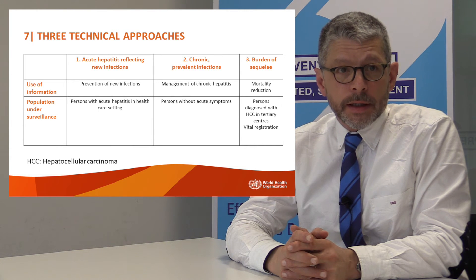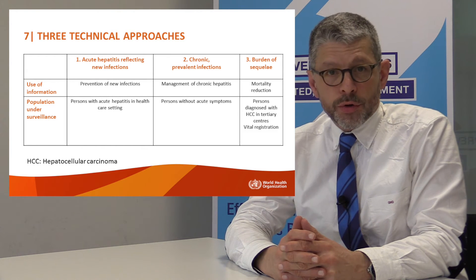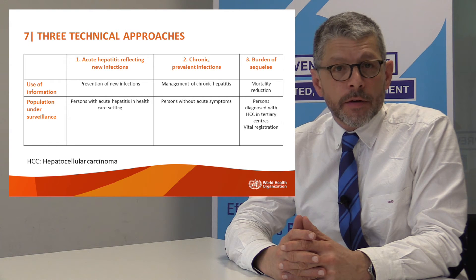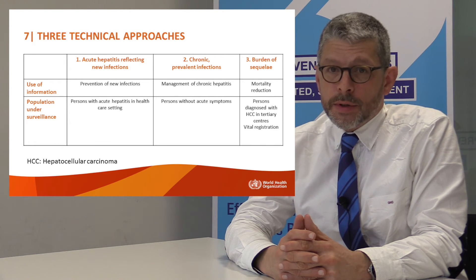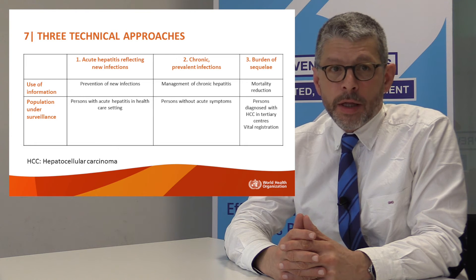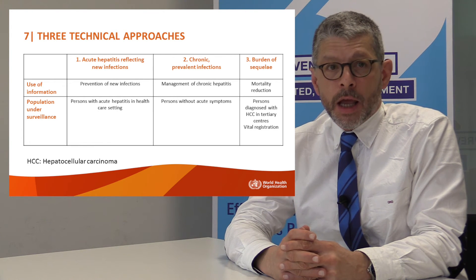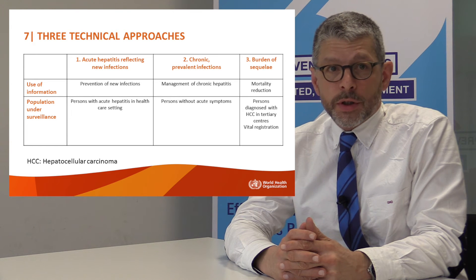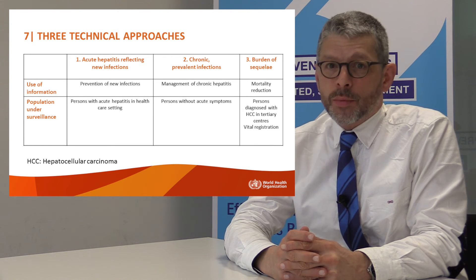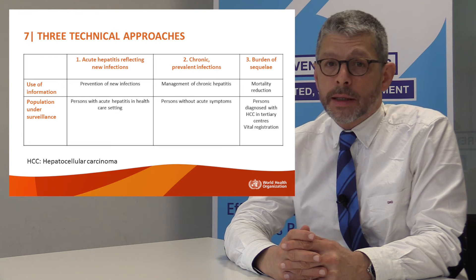For acute hepatitis surveillance, the information is used to prevent new infections. The population under surveillance will be patients presenting with acute hepatitis in healthcare facilities. For surveillance of chronic prevalent infection, the information is used to manage chronic infection, covering people without acute hepatitis in the population or presenting for care. For the burden of sequelae, the information is used to monitor the reduction in mortality, covering patients with sequelae presenting mostly in healthcare facilities.